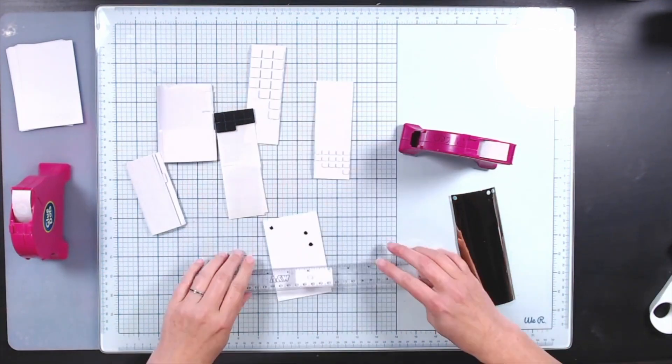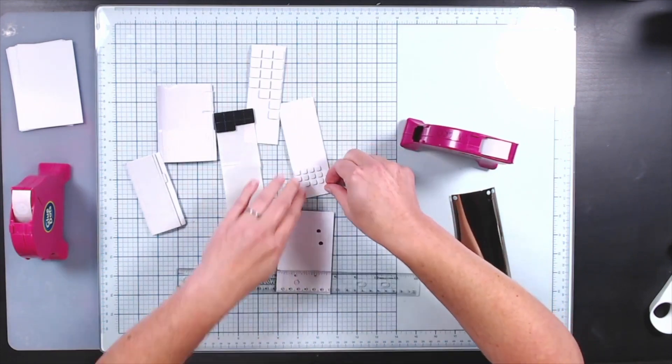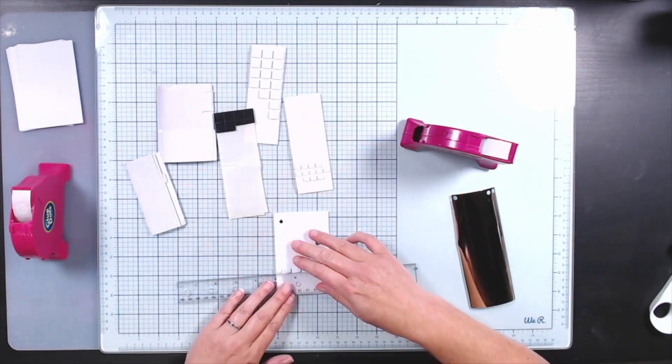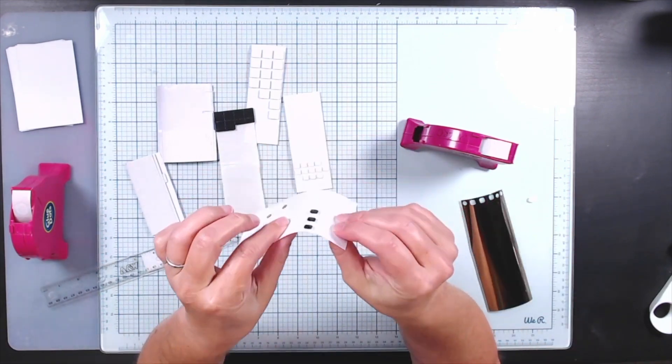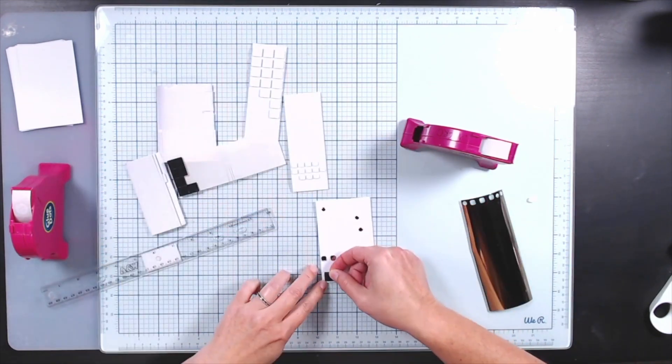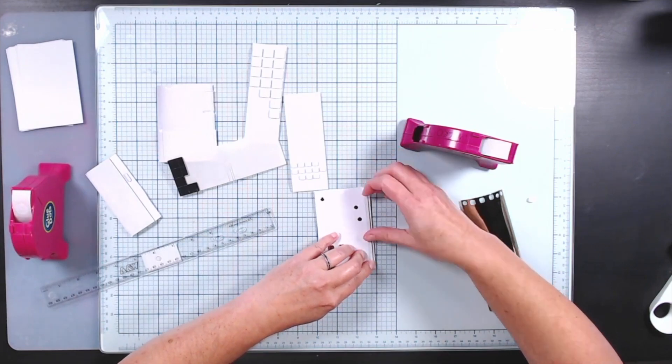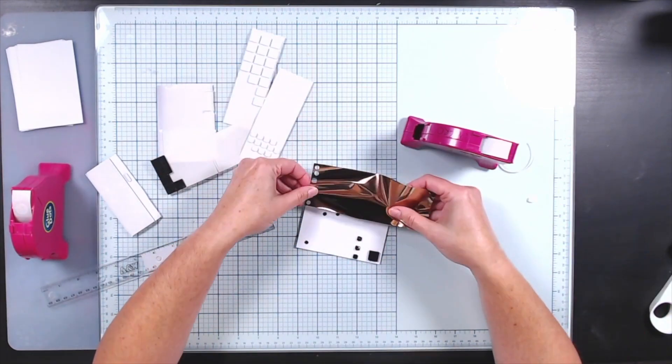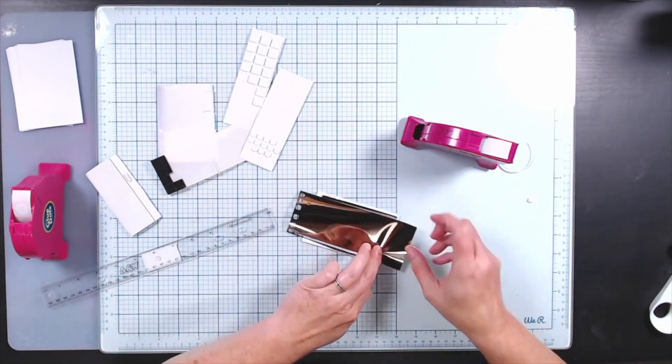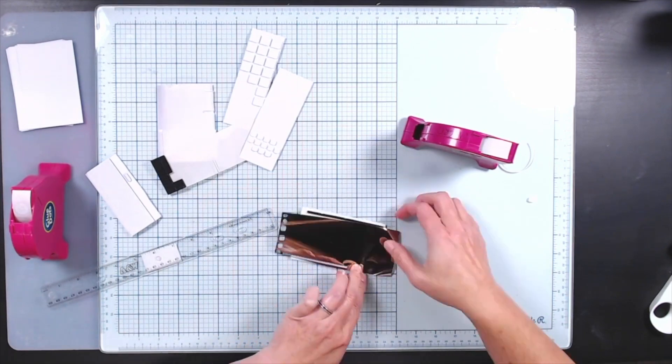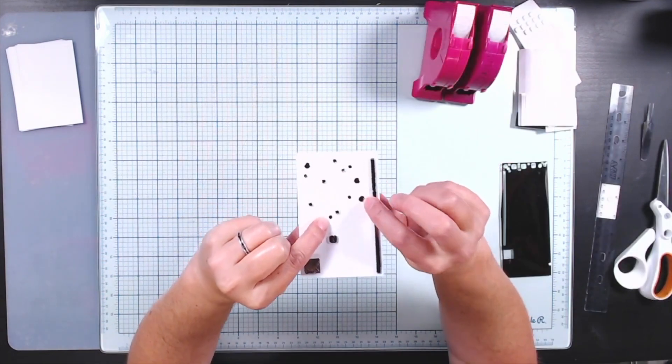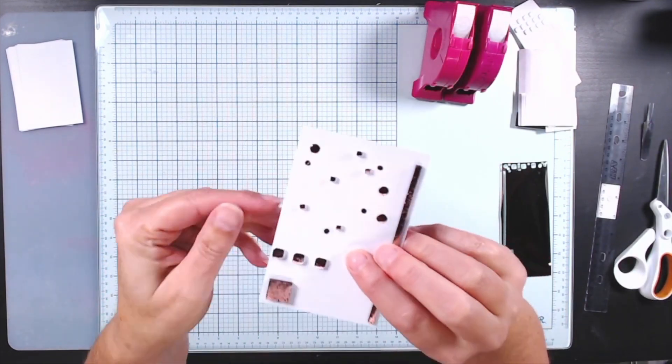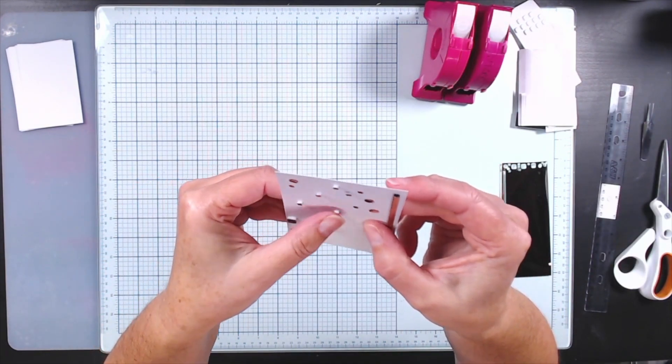There's not a lot of difference to this technique versus the tape runner technique. Again, you can use rulers to line up your bits and pieces if that's what you would like to do. The nice thing about using foams is that they do come in different colors. You can have a white foam or a black foam to get a very slightly different look to your project.